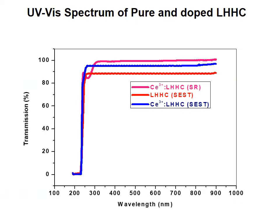Transmittance spectra: The optical study of the grown crystals was measured in the wavelength range 190–800 nm. The lower UV cutoff wavelength of the pure crystal is 260 nm with transmittance of 88%, in accordance with literature. Due to incorporation of CE3+ ion in the LHHC crystal, the UV cutoff wavelength is 240 nm. The transmittance of CE3+ LHHC crystals grown by SEST and SR methods are 95% and 98% respectively, with the SR method crystal showing enhanced transparency.